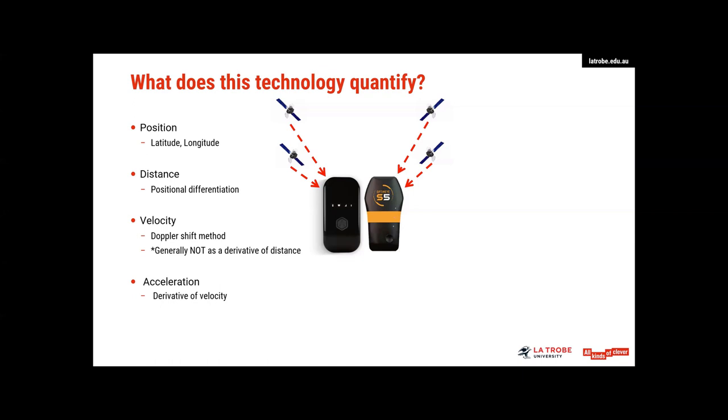So if we look at our GPS units, which receive signals from satellites orbiting the earth, what does this technology quantify? Well, we get positional data, so our latitude and longitude. We get distance, which is determined through positional differentiation. So we look at that change from latitude, longitude, A to B, and we can then work out the distance that the device has moved. We have velocity, which is calculated by the Doppler shift method, which is a way of calculating velocity by measuring the change in the frequency of the satellite signals.